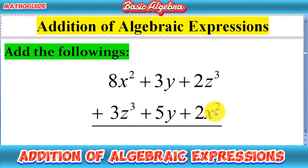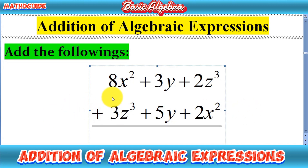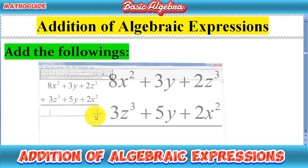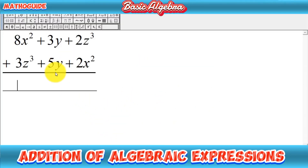There are two methods to add algebraic expressions: one is the horizontal method and one is the vertical method. As you can see, I have written these two expressions vertically in column form, so this is the vertical method. Today we will start with the vertical method — it is very easy and basic.